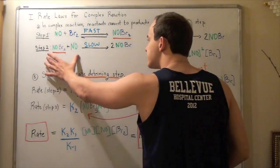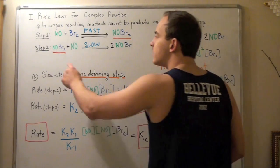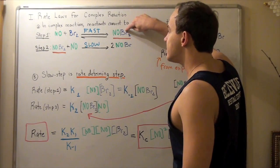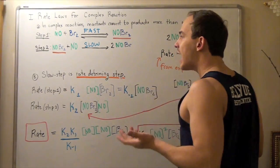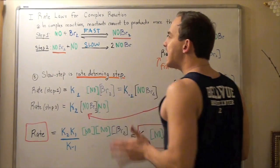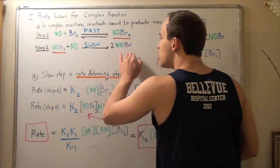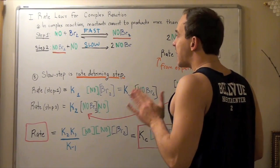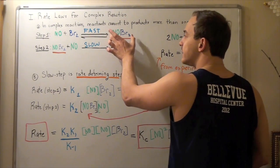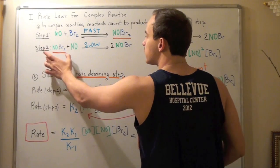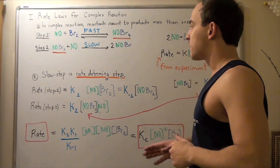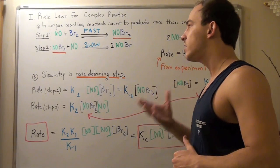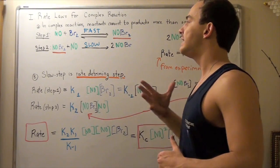Now let's look at the second step. Notice that the reactant in the second step is the intermediate NOBr2, which is the product of step one. So the product of step one is the reactant of step two, meaning step two will be dependent on step one. The intermediate is part of the slow step process. The slow step is still the rate-determining step, and we're going to use this step to find our rate law.